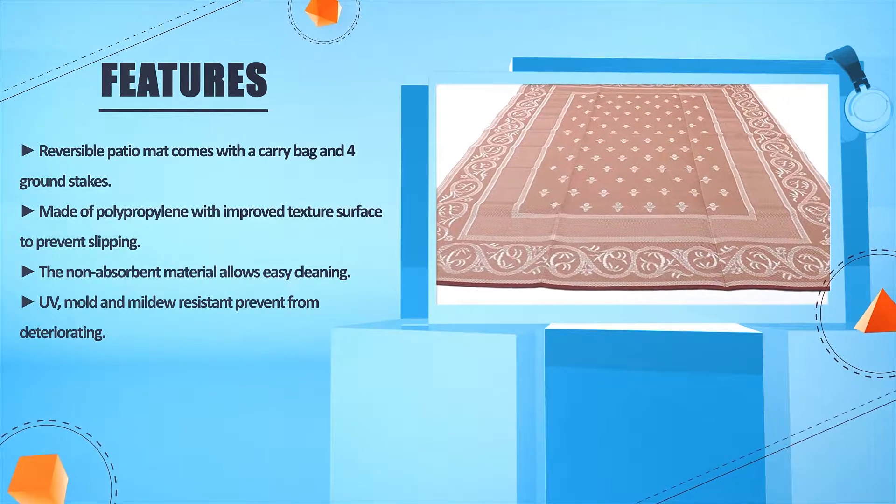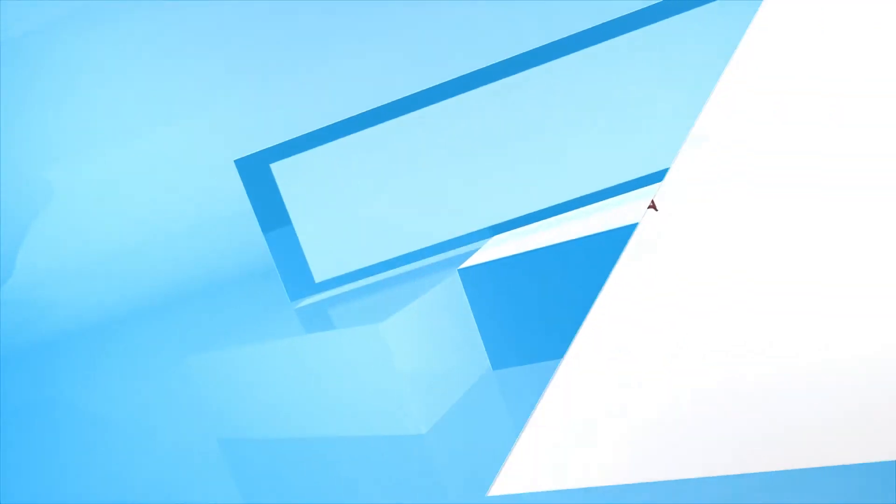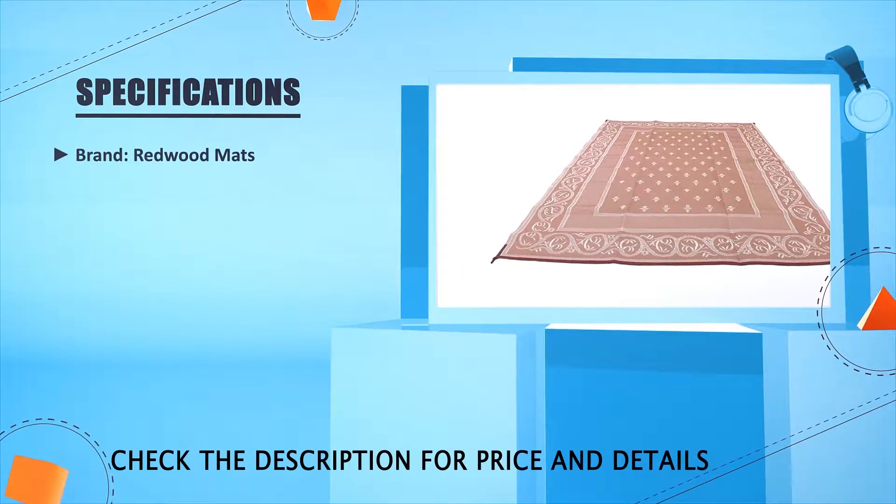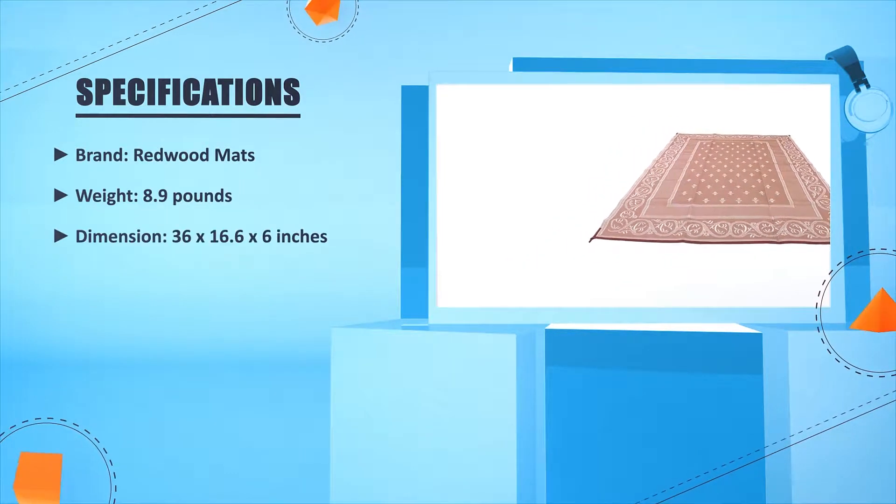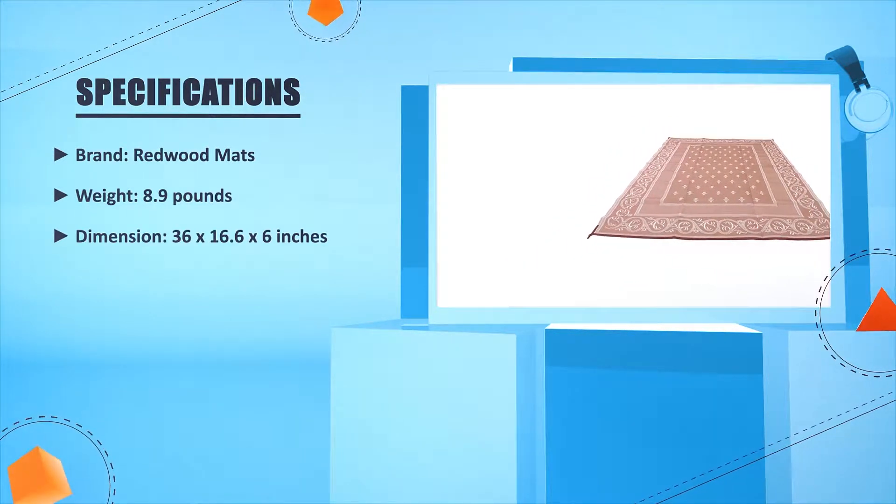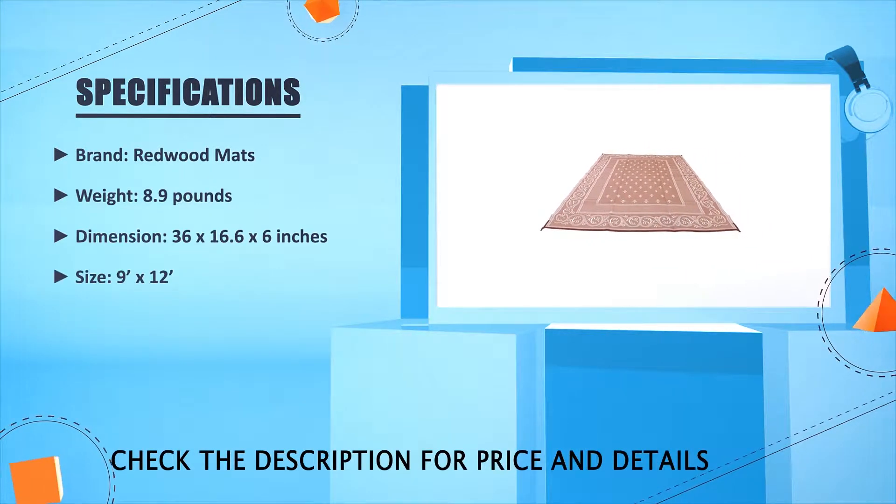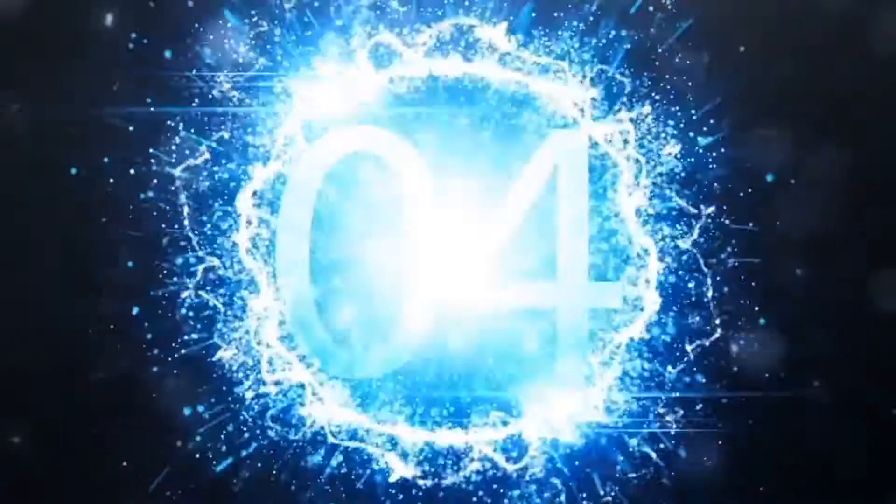The non-absorbent material allows easy cleaning. UV, mold, and mildew resistant, prevents from deteriorating. Brand: Redwood Mats. Weight: 8.9 pounds. Dimension: 36 inches by 16.6 inches by 6 inches. Size: 9 feet by 12 feet.